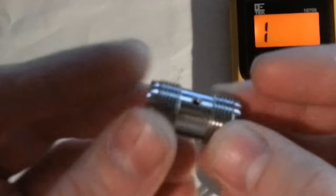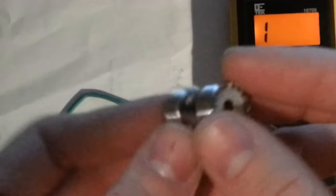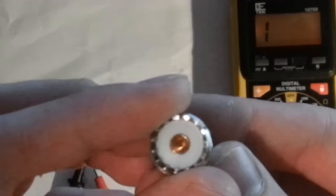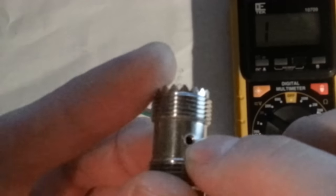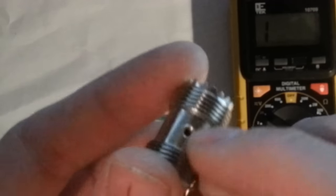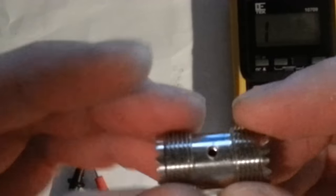I'm going to show you how to make a lightning arrester out of a PL259 coupler, about a dollar on the internet, and what I've done is I've drilled a very small hole right in the center so the two plugs can meet.